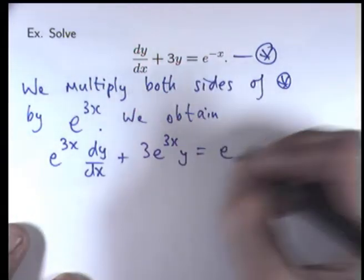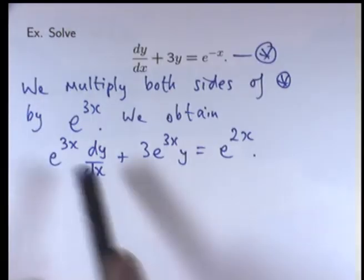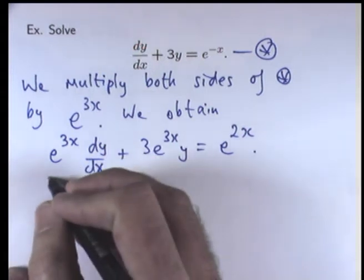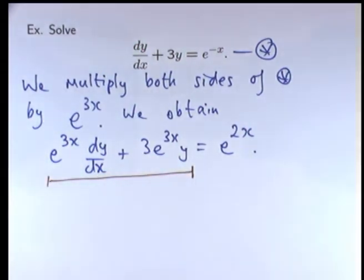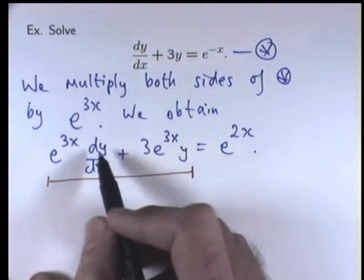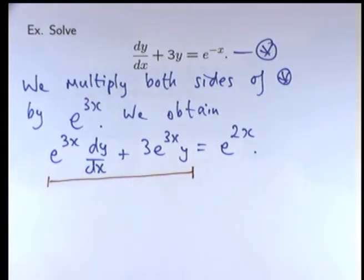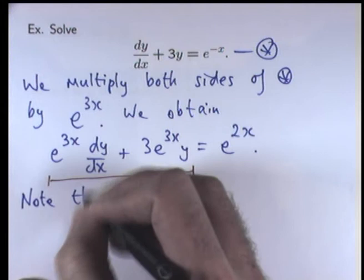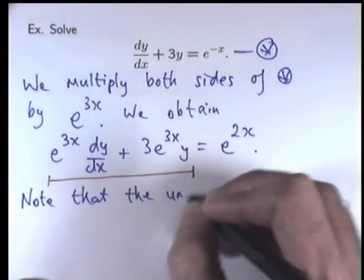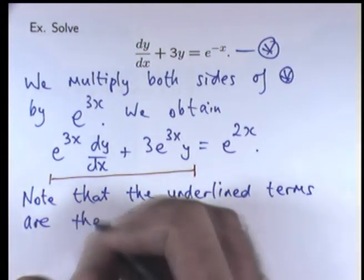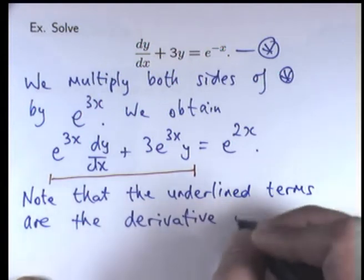Over on the right-hand side I will get e to the 2x. Now this is an important equation. If you look closely, the left-hand side is just the derivative of a particular product of functions. You have a y and a dy/dx — a function and its derivative — with multiplication and addition going on. So can you reduce this to the derivative of a product of two functions? The answer is yes. The underlined terms are the derivative of the following product.